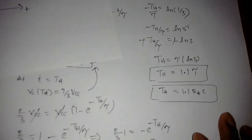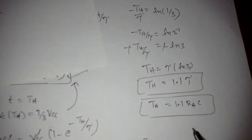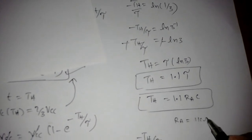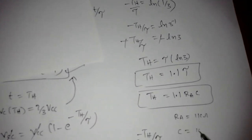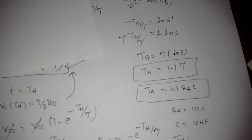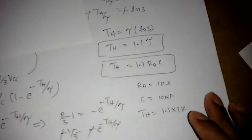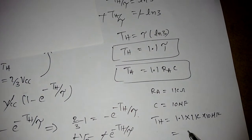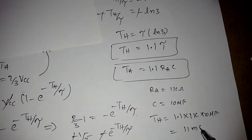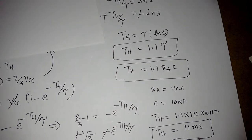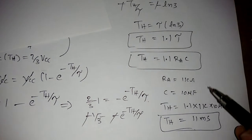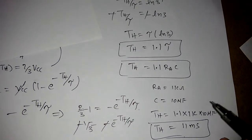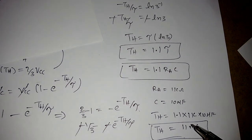For example, if we choose Ra = 1 kΩ and C = 10 μF, then the pulse width is 1.1 × 1kΩ × 10μF ≈ 11 milliseconds. Depending on the values of Ra and C, we can generate pulse widths ranging from milliseconds up to one hour, 60 seconds, 30 minutes, etc.